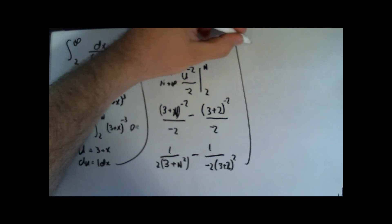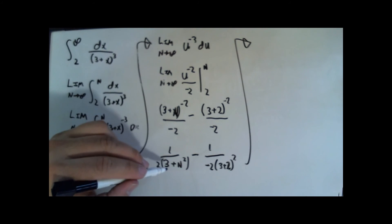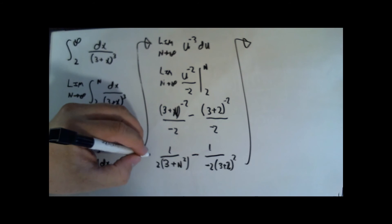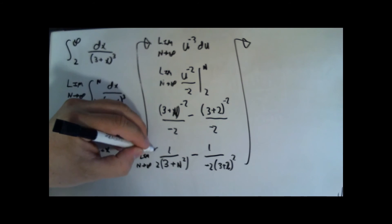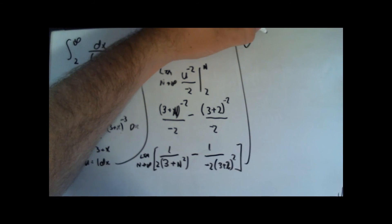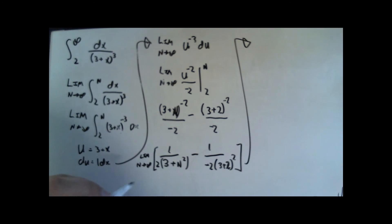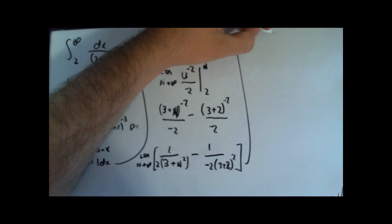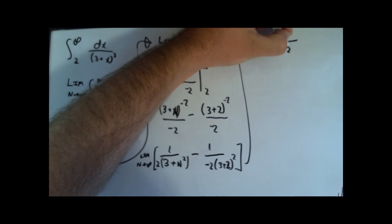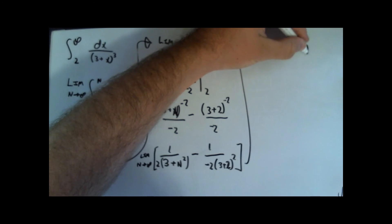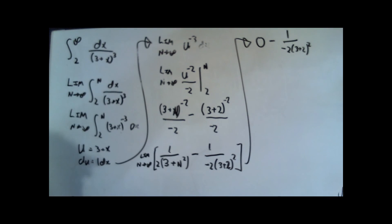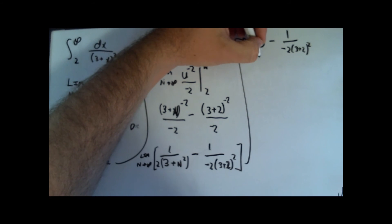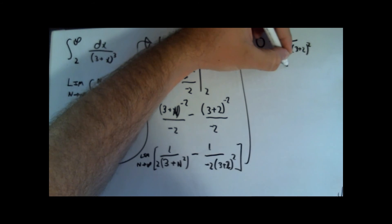I can simplify that further. I didn't write in my limit sign. How terrible is that? I've got the limit as n approaches infinity of this. I can go ahead and evaluate my limit now, and I'm going to plug in infinity in here. We have 1 over an insanely huge number. That makes 0 minus 1 over negative 2 times 3 plus 2 squared. Simple algebraic simplification would dictate 0 plus 1 over negative 2 times 25.